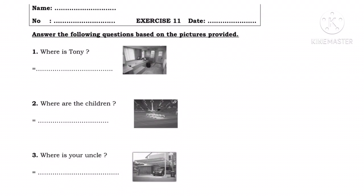Alright, let's open your English supplementary workbook, unit 5, exercise 11. Buka buku English supplementary workbook kamu, unit kelima, latihan ke-11. Answer the following question based on the pictures provided — jawablah pertanyaan berikut berdasarkan gambar yang tersedia. Nah, untuk menjawabnya, kita perlu memperhatikan apa subjek yang digunakan dan to be setelah subjek.